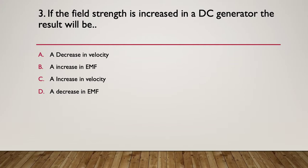Question three. If the field strength is increased in a DC generator the result will be what? A. A decrease in velocity. B. An increase in EMF. C. An increase in velocity. Or D. A decrease in EMF. Pause here.